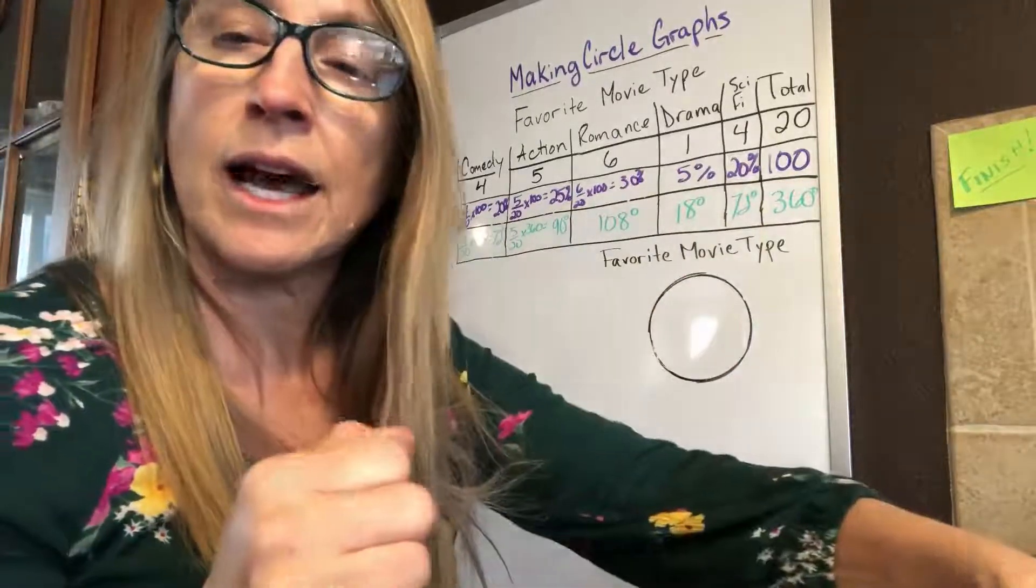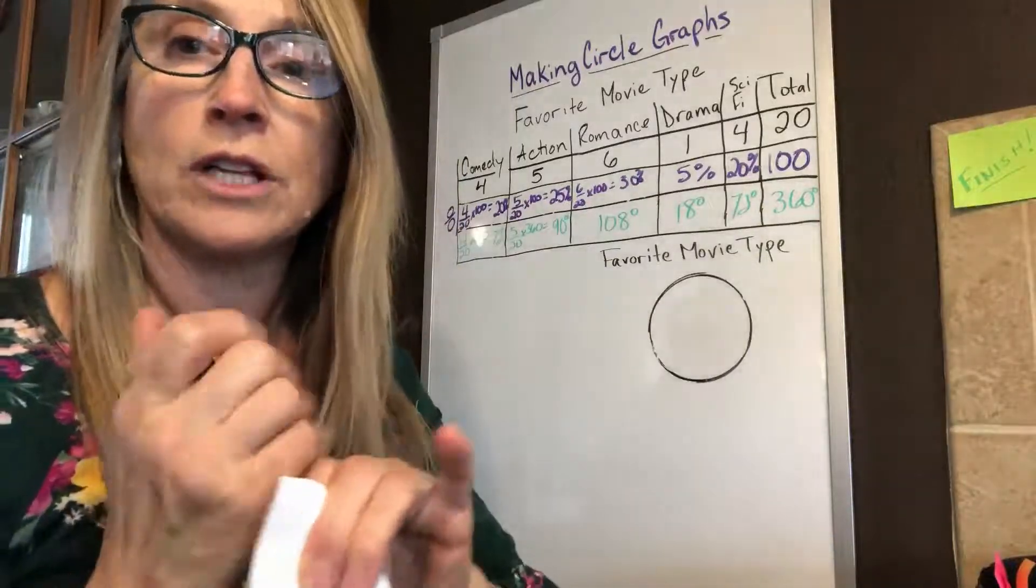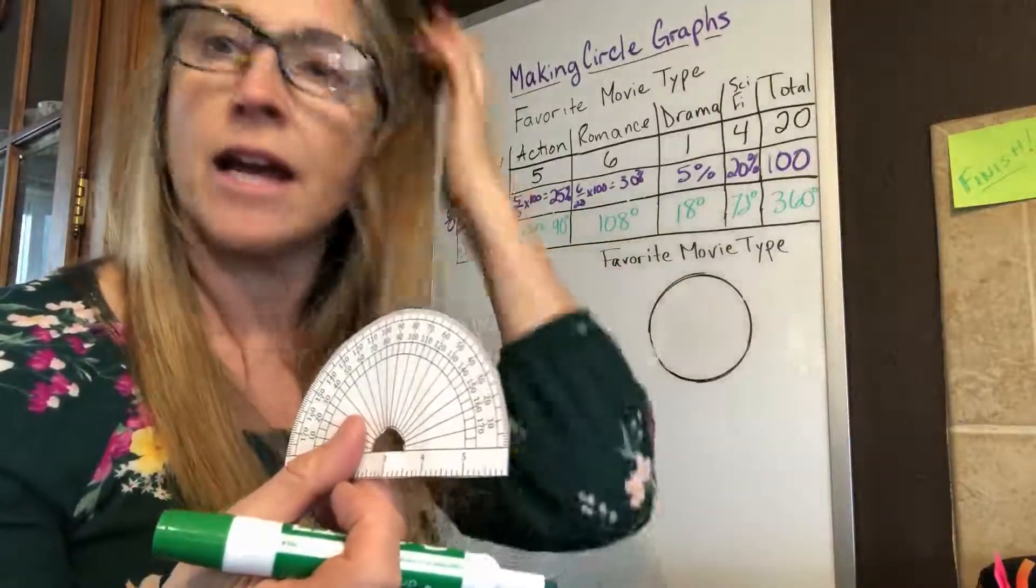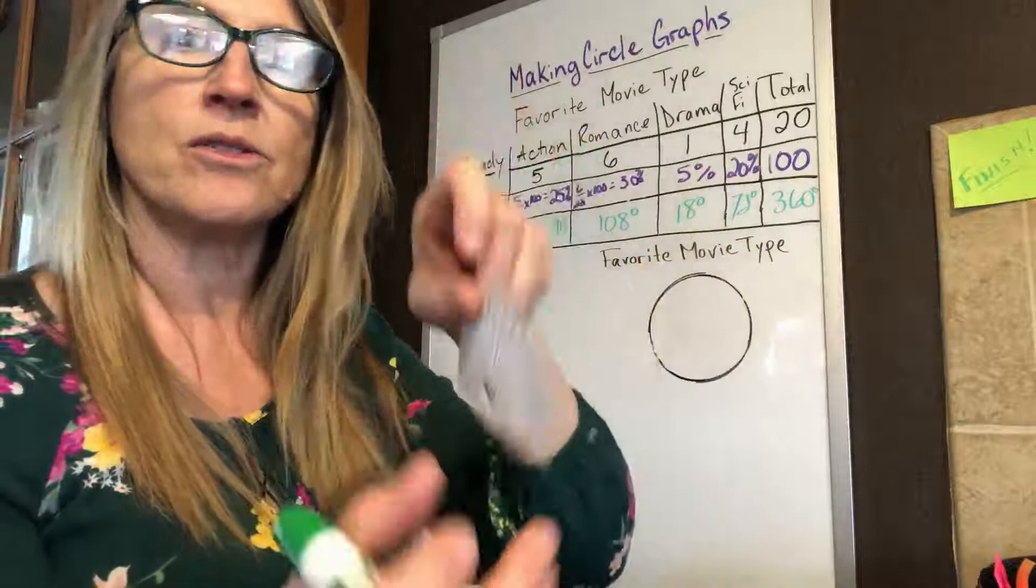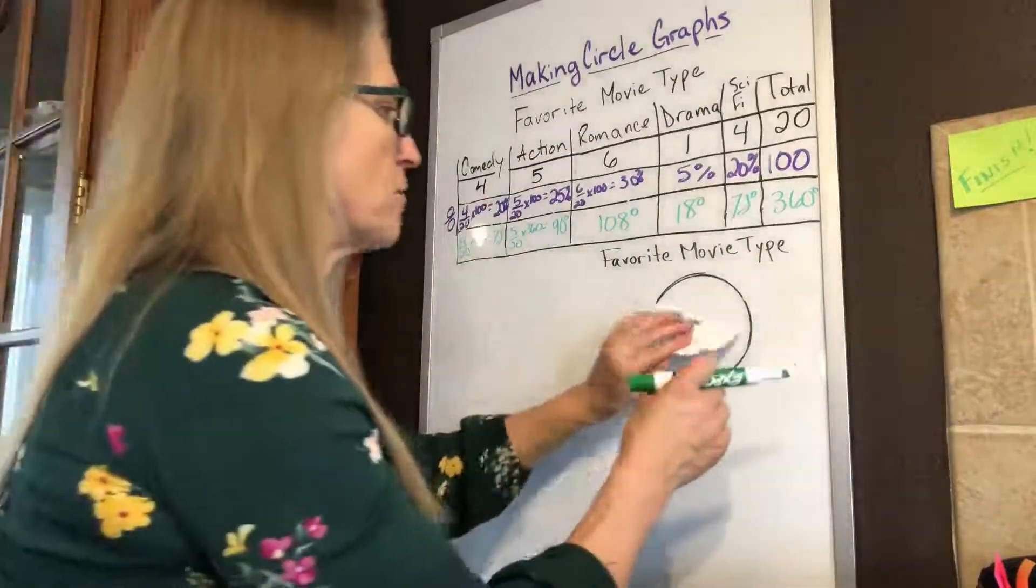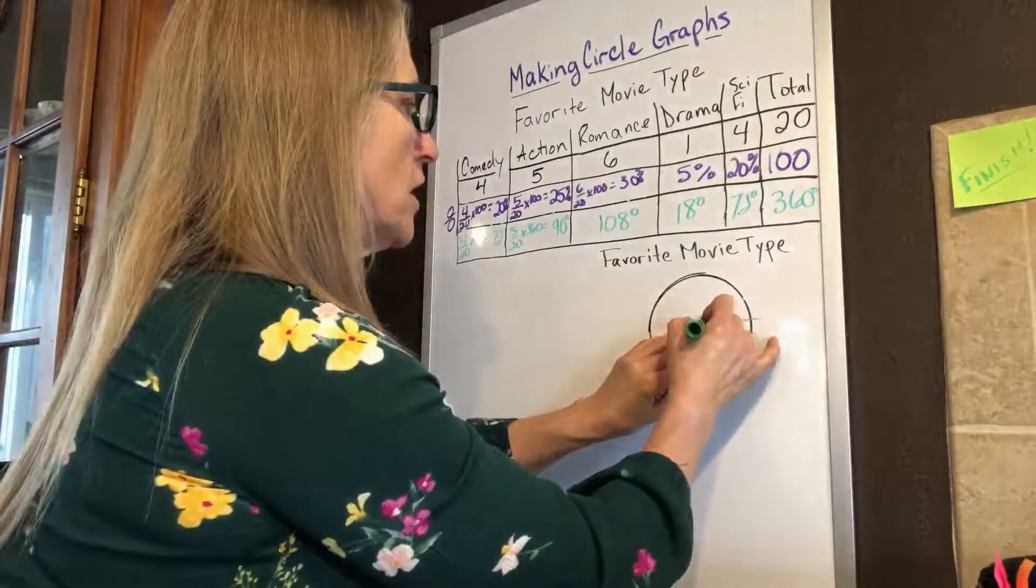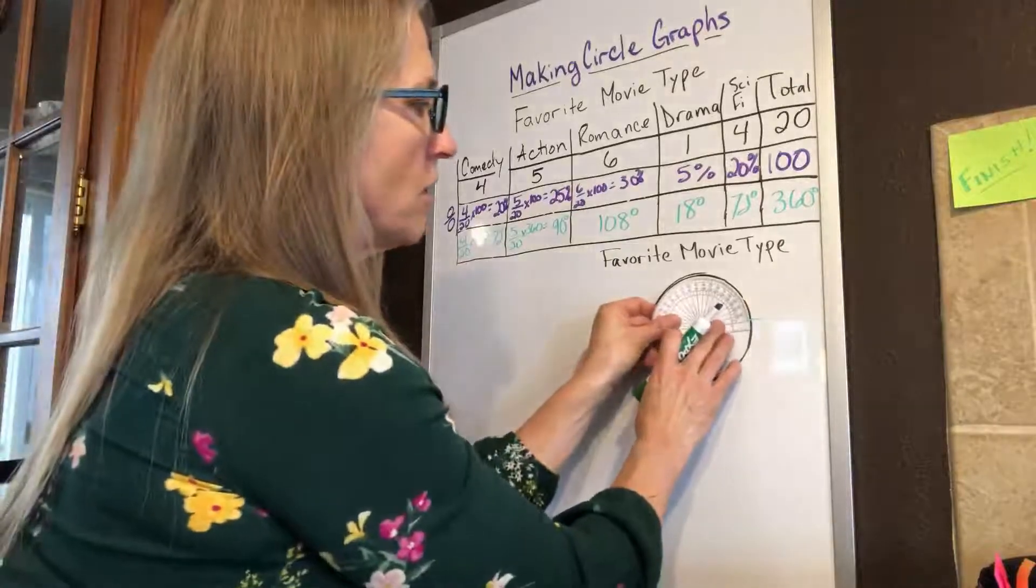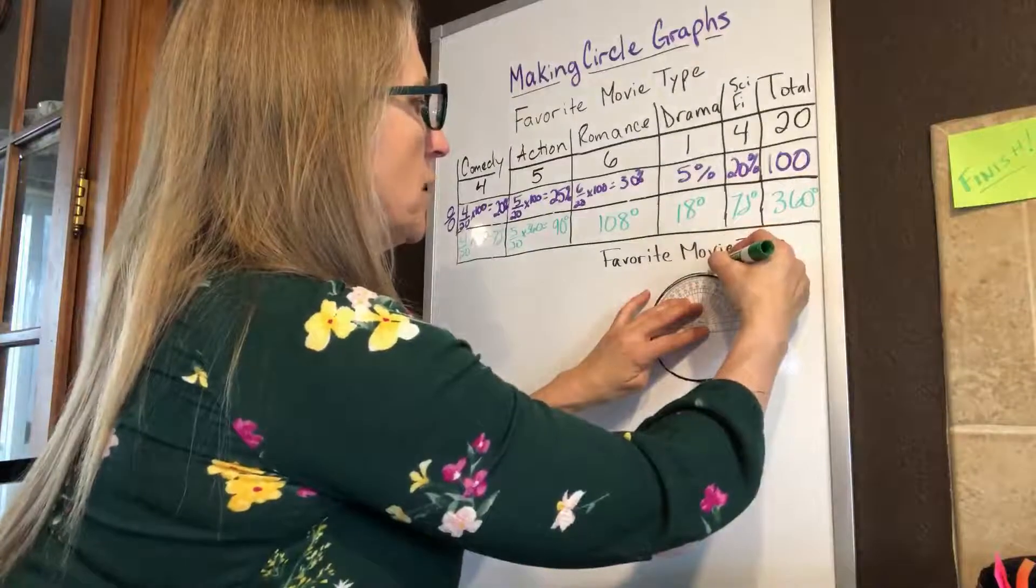Now, the one thing that I forgot to include in our packet that I want you to know is I forgot a protractor. I did not have a plastic one here at my house either, so I printed one. And I'm going to use it to create the degrees of my circle. I'm going to make my center and my first line. And then from there, I want to go 72 degrees. So I'm going to line up my protractor and put in my 72 degrees.